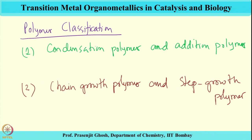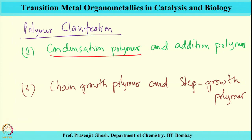In this context, we studied condensation polymers in great detail in the previous class. We saw that many commercially important polymers like nylon, polyester, and polycarbonate are synthesized using condensation polymerization. These use poly-functionalized monomers of two types, such as diamine-diacid, diol-diacid, or diol-acid chlorides.